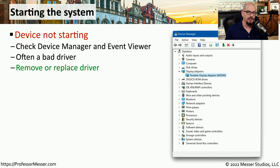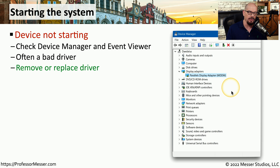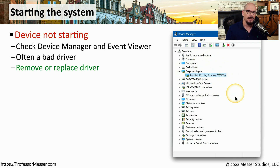If Windows is starting but you have a problem with a piece of hardware not working as expected, you can check Device Manager and Event Viewer to see how that device is performing. Device Manager will tell you whether the hardware is working properly, and if there is an issue, you can make changes to the driver and configuration from within Device Manager. It may be that removing the existing driver and loading a newer version is all you need to get that hardware working again.